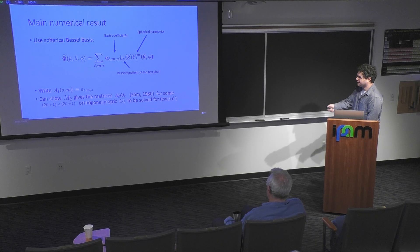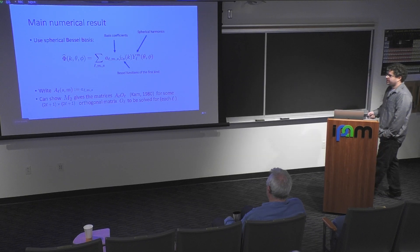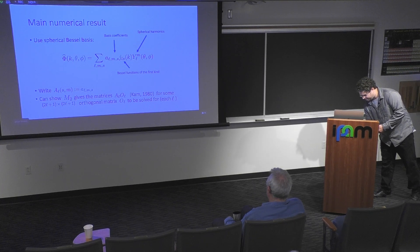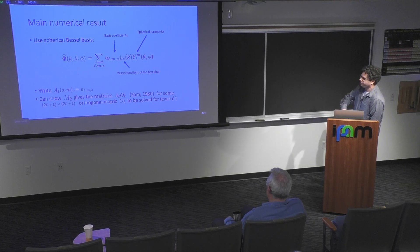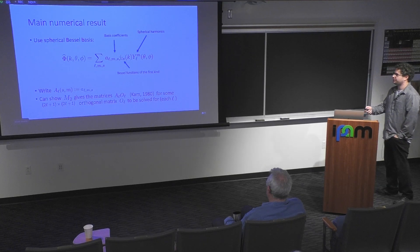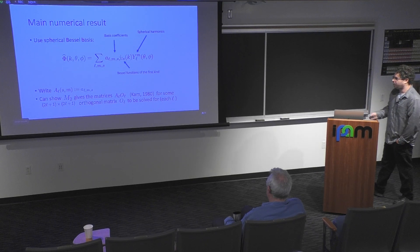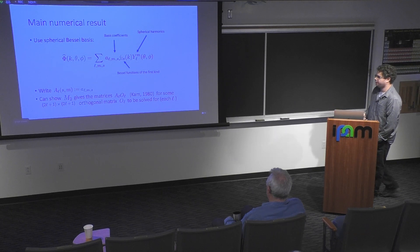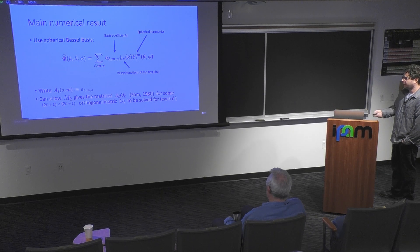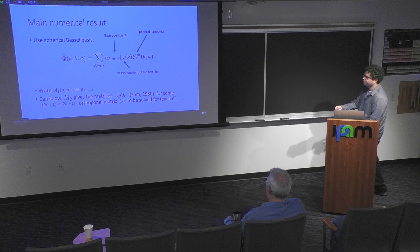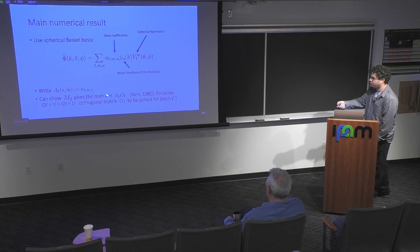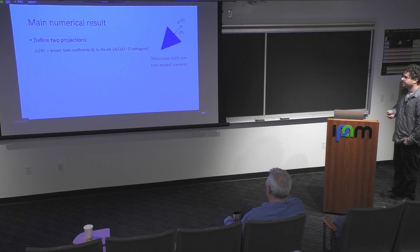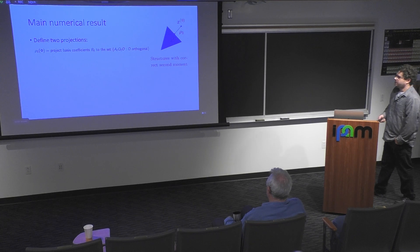This is what we're after, these expansion coefficients. They're actually triply indexed. But if you freeze one index, which is this L, the spherical harmonic degree, then you get a matrix. It's convenient to think of the molecule phi hat as being specified by a sequence of matrices AL, which are storing these expansion coefficients. We're really after these AL matrices. What Kamm did in that paper I showed is he really analyzed the second moment well. He showed that the second moment gives you these expansion coefficients, these AL matrices, up to some unknown orthogonal matrix. For every spherical harmonic degree L, you can almost get all the expansion coefficients, but you're off by some 2L plus 1 by 2L plus 1 orthogonal matrix, which you need to solve for using other information.